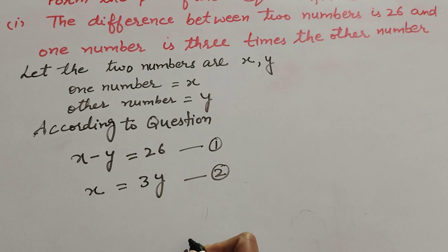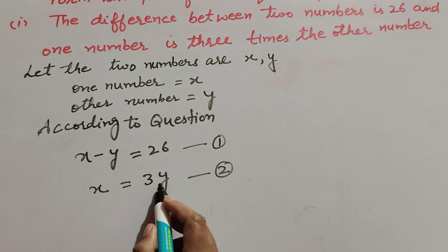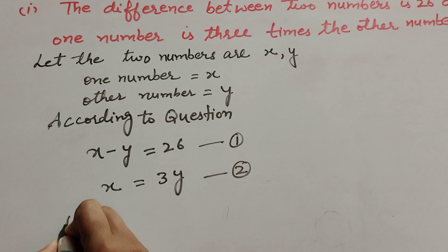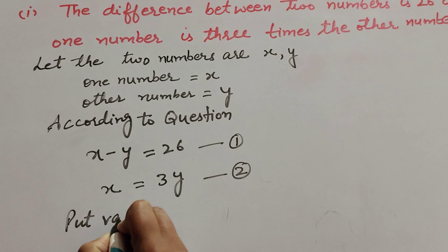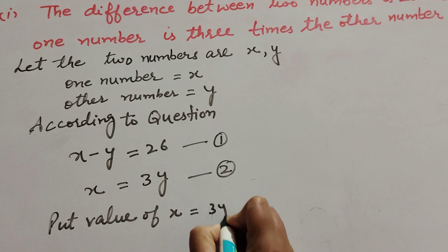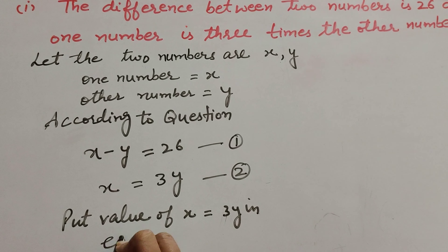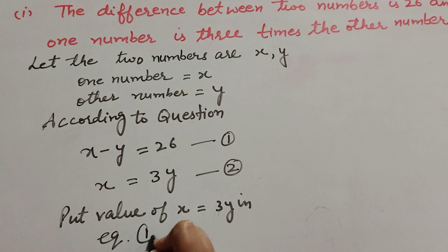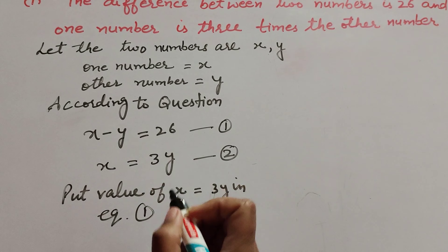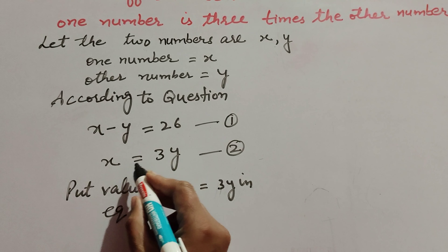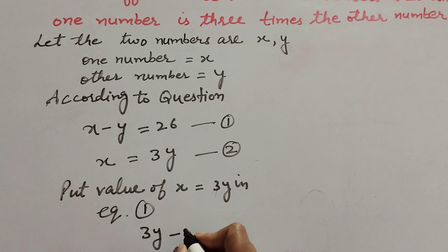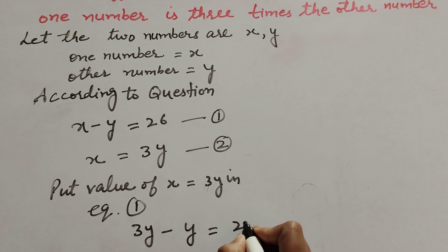In equation number two, x equals three y. We put the value of x equal to three y into equation number one. Equation number one is x minus y equals 26, so substituting gives three y minus y equals 26.